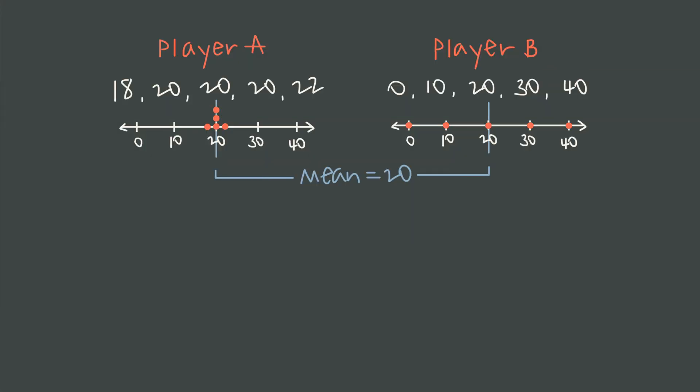So let's start with the most intuitive idea, which is measuring how far each of player A's scores is from the average of 20. This distance is called deviation. So the score of 18 for player A is two points below the average or below the mean, which means its deviation is negative 2. We find that by subtracting the mean or the average from the actual score. On the other hand, the score of 22 is two points above the average, so its deviation is positive 2. The scores of 20 are right on the average, so their deviation is 0.